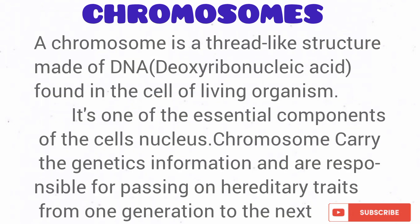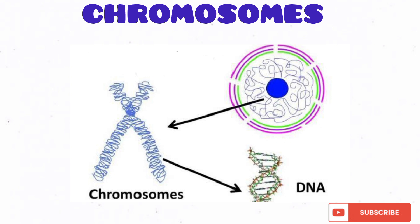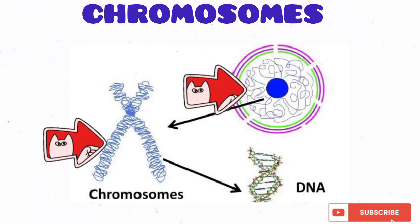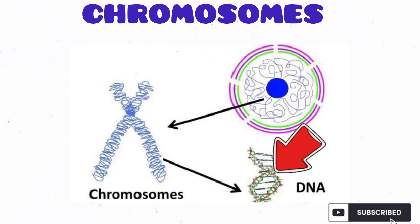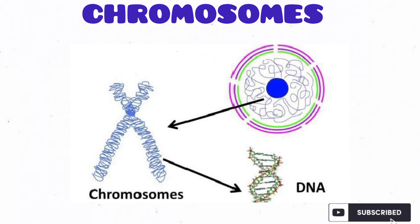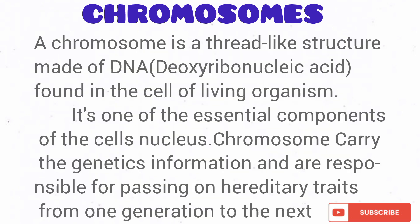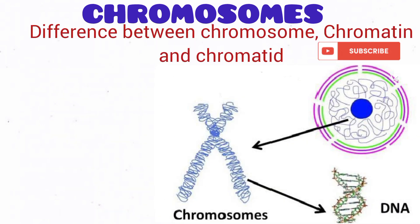What is a chromosome? As you can see from the diagram, a chromosome is a thread-like structure made up of DNA tightly coiled around proteins called histones, and they are found in the nucleus of the cell. Chromosomes carry genetic material and they are responsible for passing on hereditary traits from one generation to the next.